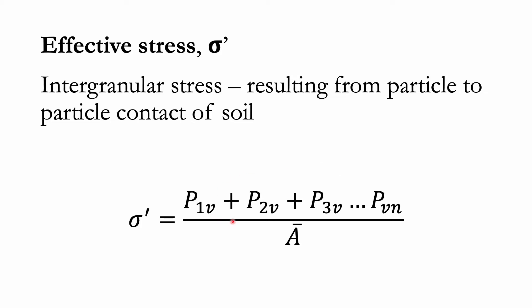The effective stress is the sum of the vertical components of the forces developed at the point of contact of the solid particles per unit cross-sectional area of the soil mass. Here, A is the cross-sectional area of the soil mass under consideration.